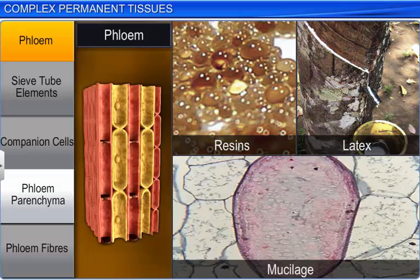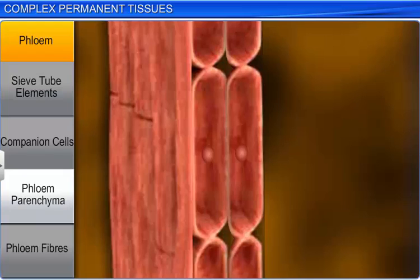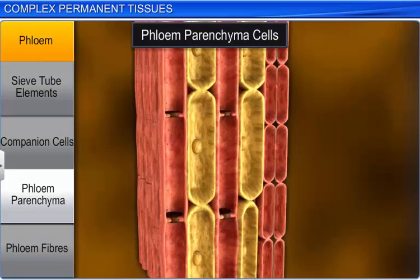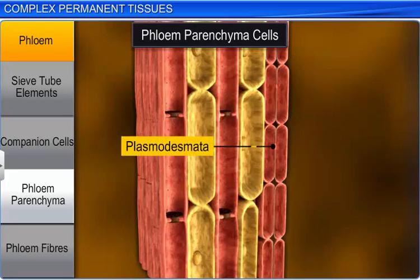Phloem parenchyma stores food material and other substances like resins, latex, and mucilage. It consists of elongated, tapering cylindrical cells that have dense cytoplasm and a nucleus. The cell wall of phloem parenchyma is made up of cellulose, and it has pits through which plasmodesmatal connections exist between the cells.